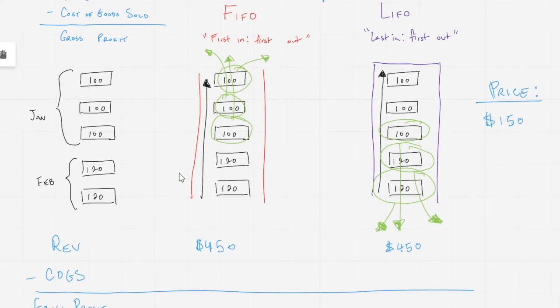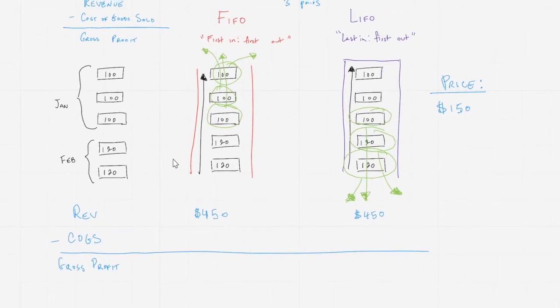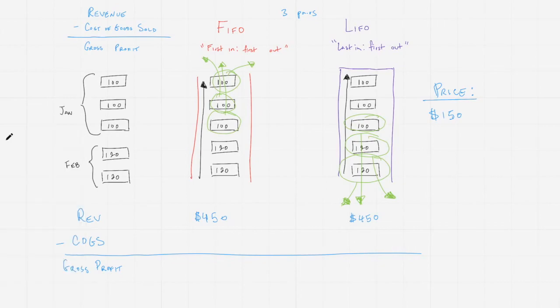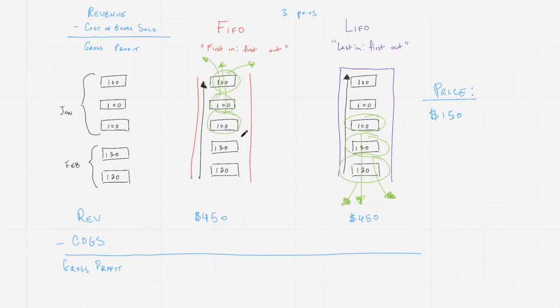The revenue is going to be the same, $450 in both cases. It's the COGS, the cost of goods sold, however, that's going to differ depending on the method that we use. If we're using FIFO, that means we assume that the first three pairs to come in are the first three pairs to go out to get sold to the customer. We're selling three pairs, each of which cost us $100, for a total cost of goods sold of $300.